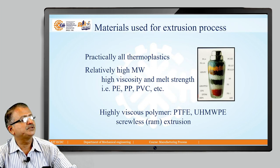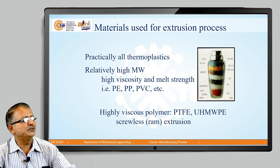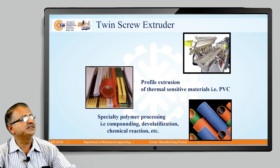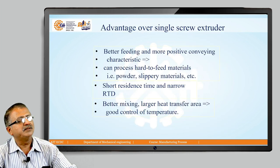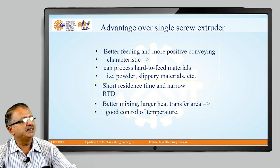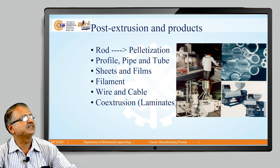Materials used for extrusion include practically all thermoplastics with relatively high viscosity, such as polyethylene, polypropylene, and polyvinyl chloride. Highly viscous polymers are used for screwless or ram extrusion. The twin screw extruder is demonstrated for profile extrusion of thermally sensitive materials like PVC. Process advantages of the single screw extruder include better feeding, ability to process hard-to-feed materials, better mixing, larger heat transfer area, and good temperature control.